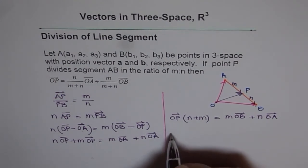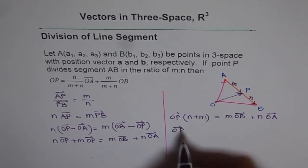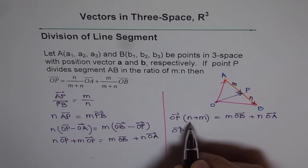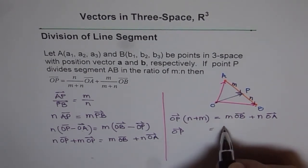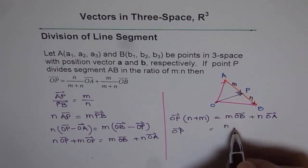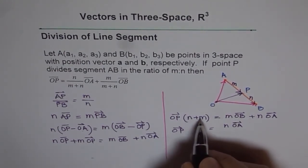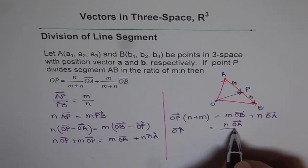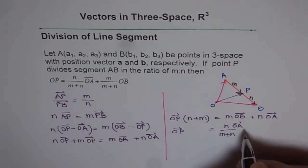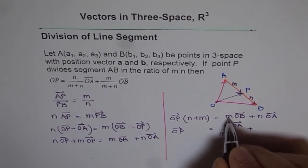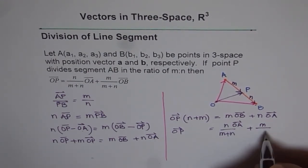So from here, we can write OP is equal to, we can divide this by N plus M. Or we can rewrite this. So we'll write N times OA first. And then we'll divide by N plus M, both of them. So we'll write M plus N as given in the formula. Plus M over M plus N OB.